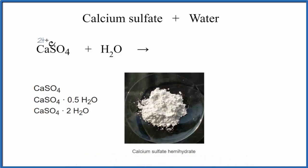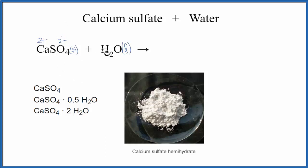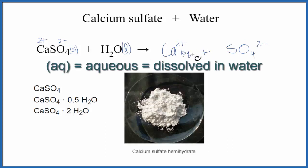Calcium has a 2+ charge — it's in group 2 on the periodic table. The sulfate polyatomic ion has a 2− charge, so that makes a neutral molecule, and it's a solid. So we have solid anhydrous calcium sulfate and we add it to liquid water. We might expect that it'll break up — dissociate into its ions — so you'd have Ca2+ plus the sulfate ion. And since they're dissolved in water, we could write a little "aq" after them, which means aqueous, or dissolved in water. And then we wouldn't need to write water again on this side.